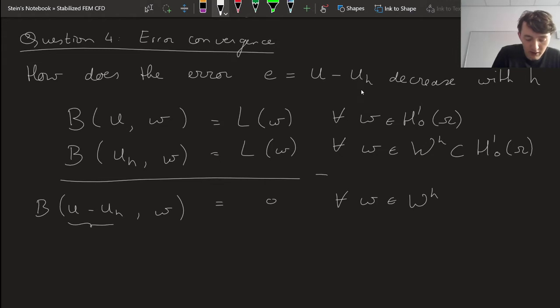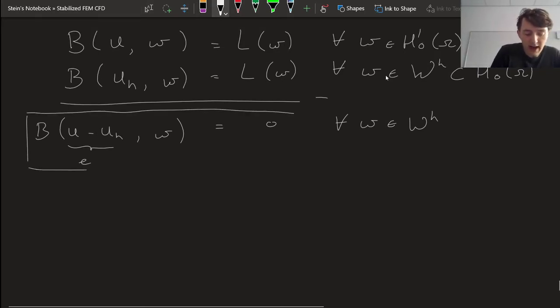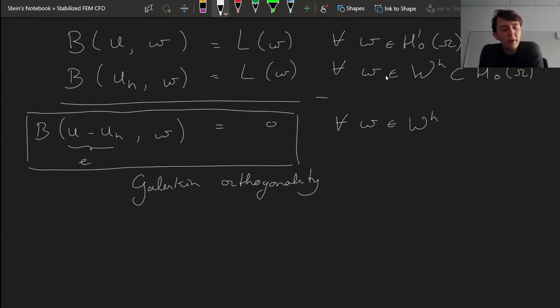Now of course this is again our error, e. And this notion that somehow our error satisfies this weighted measure being equal to zero, that is what we call Galerkin orthogonality. Somehow if we plug in our error in the first slot of our bilinear form, then if we measure that or we choose any weighting function w in our finite dimensional space, then that is going to be zero, it's going to be orthogonal to that in a Galerkin sense.